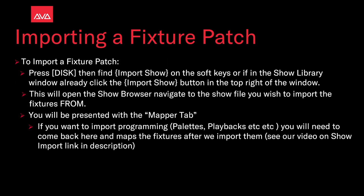To import a fixture patch, press Disk and find Import Show on the soft keys, or if you're already in the show library, click the Import Show button at the top right of the window. This will open the show browser to navigate to the show you wish to import the fixtures from.